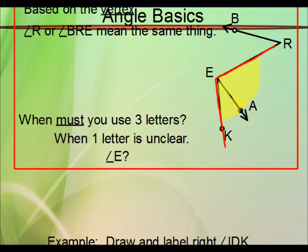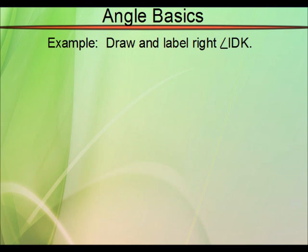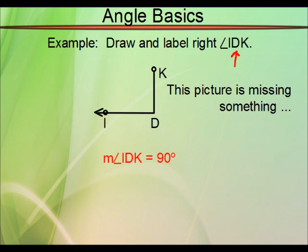Let's do an example. Let's say that we wanted to draw and label right angle IDK. Well, if it's a right angle, then obviously we're going for something that's 90 degrees. Keep in mind here, D is in the middle. That should tell you what the vertex here is. So, something like this.